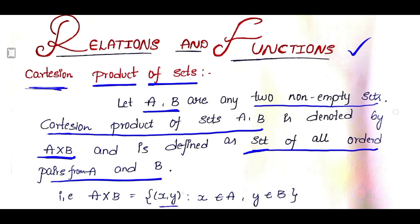What is x comma y here? It is an ordered pair. Pair means two, and ordered pair contains an order. X belongs to the first set A, and Y is in set B. You can understand this more clearly with the examples.